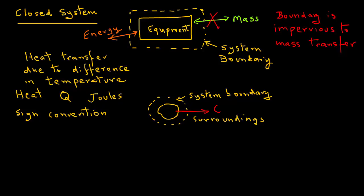There is a sign convention that we must follow. The sign convention is that if the heat flow is from the system to the surroundings, then Q is negative. On the other hand, if the heat transfer is from the surroundings to the system, then Q is positive.